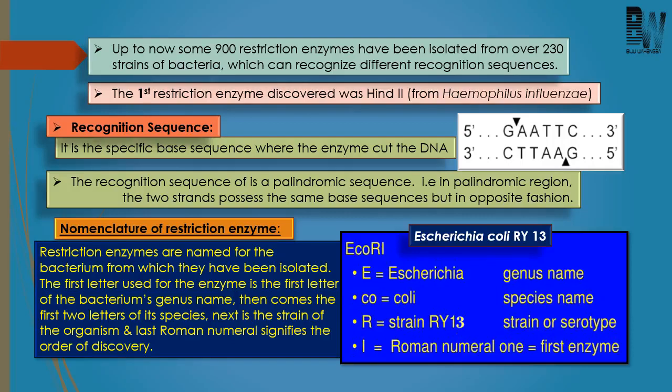The recognition sequences are arranged in palindrome. Palindrome means a group of letters that form the same word when read both forward or backward. When this is applied to DNA, it means that the two strands of DNA should possess the same base sequence but in opposite fashion — that is, read in the 5' to 3' direction on both strands.